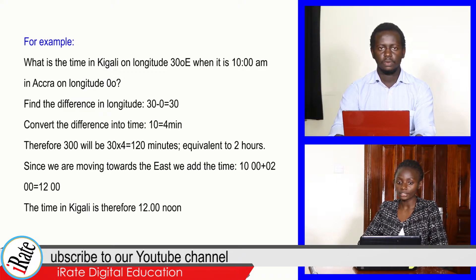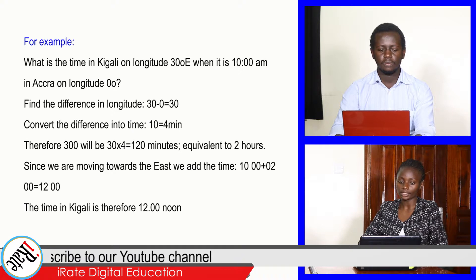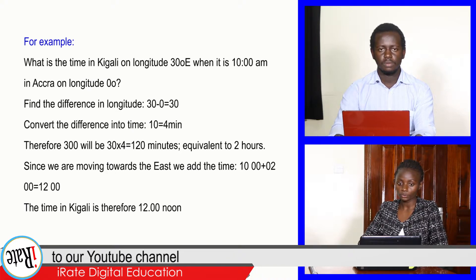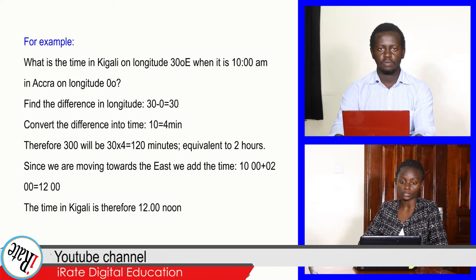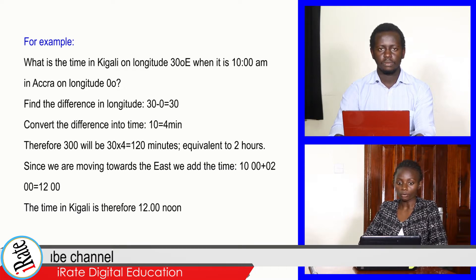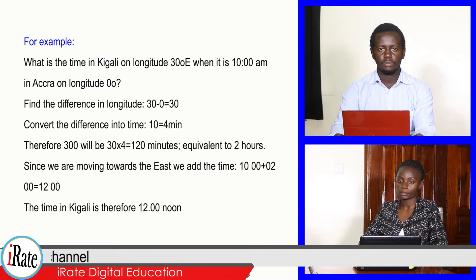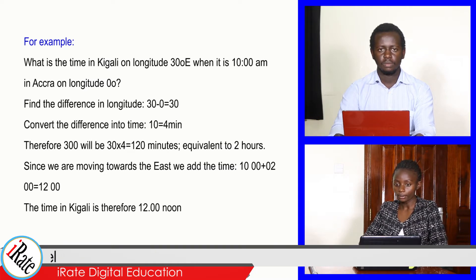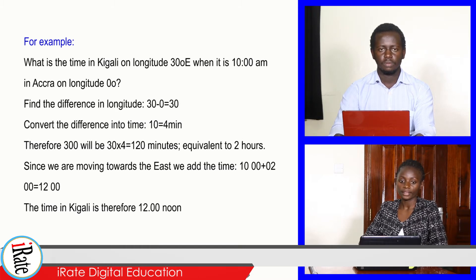Convert the difference into time: 1 degree is equal to 4 minutes. Therefore, 30 degrees will be 30 multiplied by 4, which is equal to 120 minutes, equivalent to 2 hours. Since we are moving towards the east, we add the time, which is 10:00 hours plus 02:00 hours, which is 12:00. The time in Kigali, therefore, is 12:00.